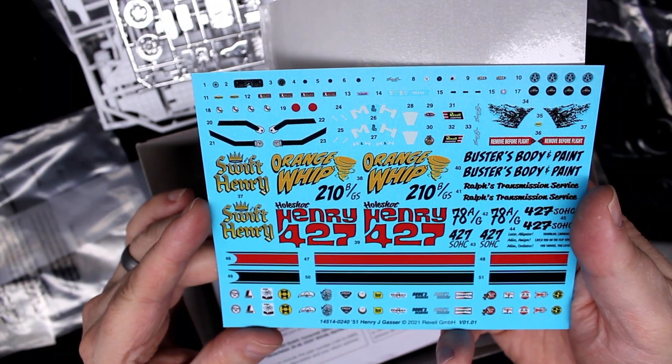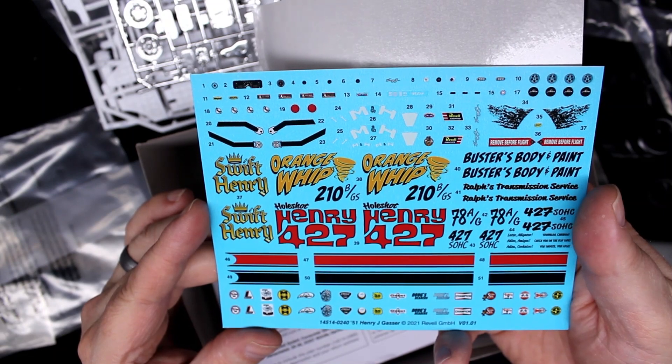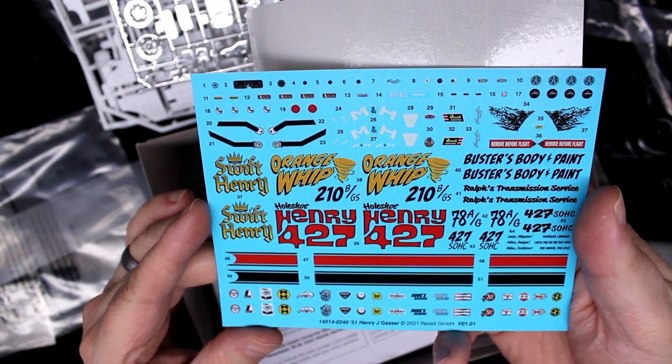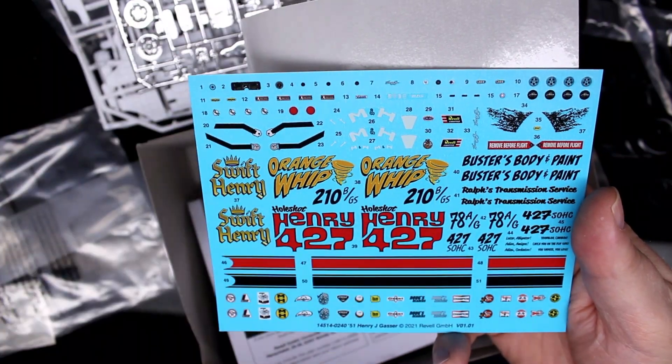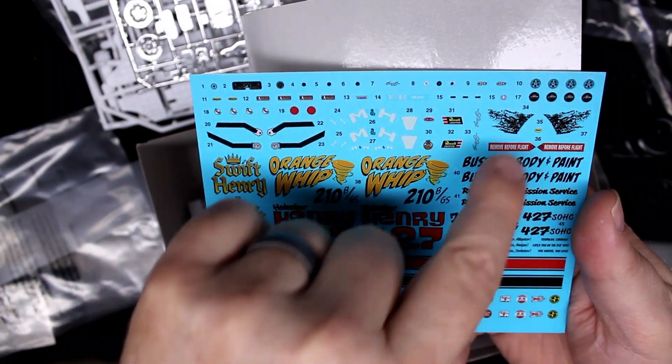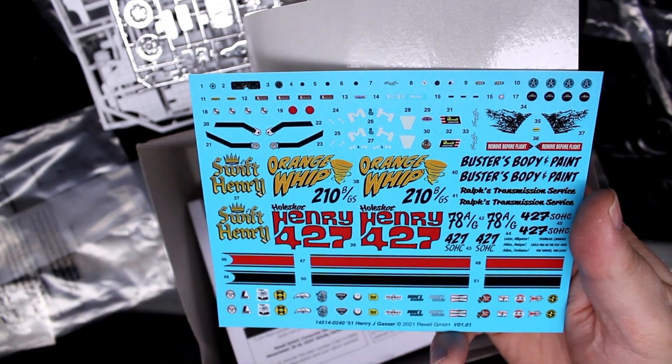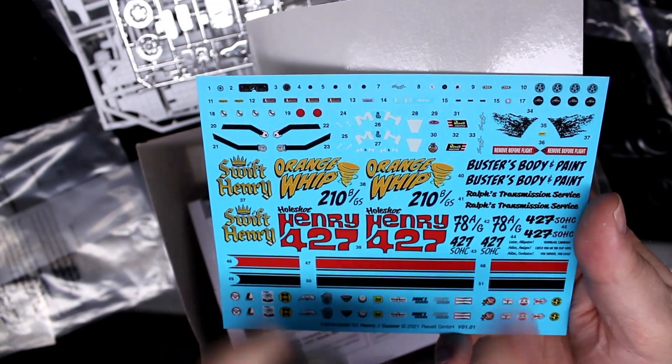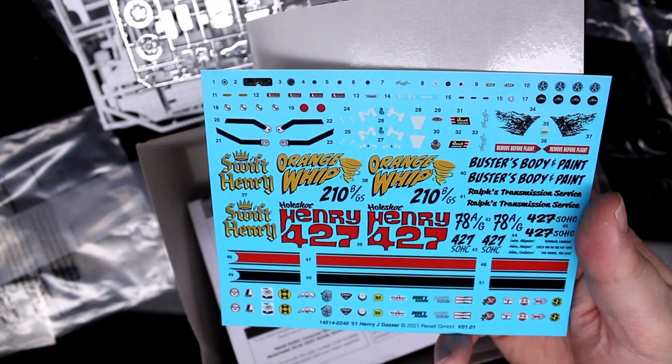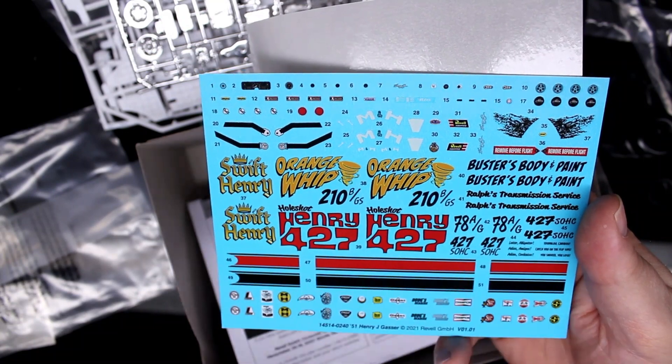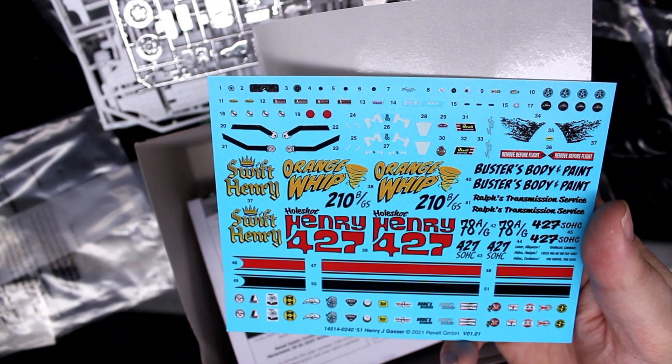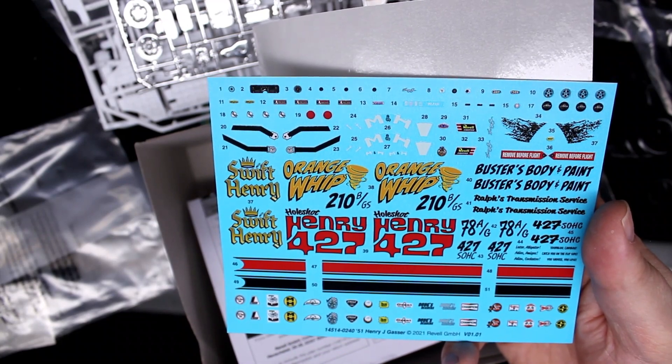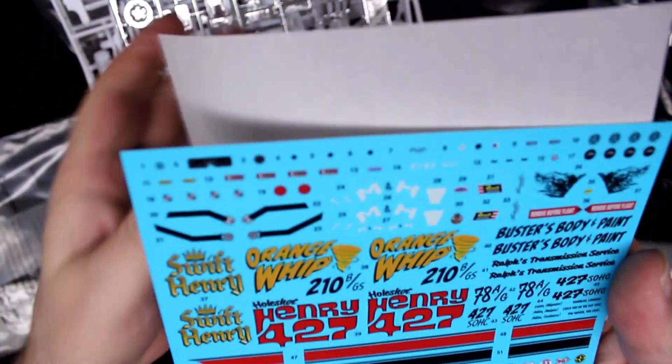So, we've got a couple different names there. The Orange Whip or the Swift Henry. And some seat belt decals. Some dashboard stuff. I guess that's fender dirt. Some, couple sponsors. Some racing information there. And some pinstripes. And some other stickers you get with parts. That's pretty extensive.